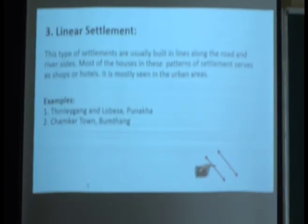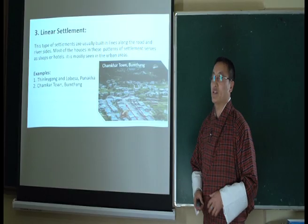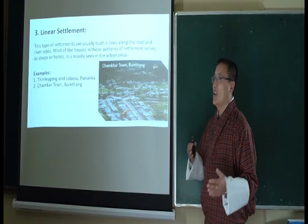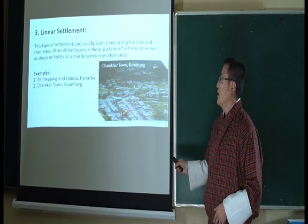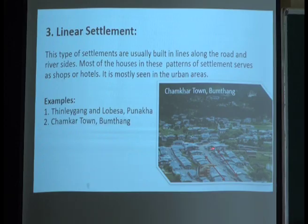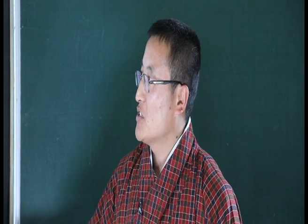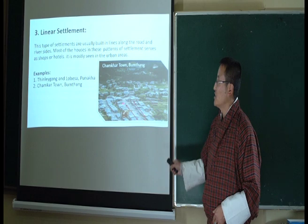The third pattern is linear settlement. This type of settlement is usually built in lines along a riverside or roadside. Most of the houses in this pattern serve as shops and hotels. Examples include Tilengang, Lobesa in Punakha, and Chamkha town in Bumthang.